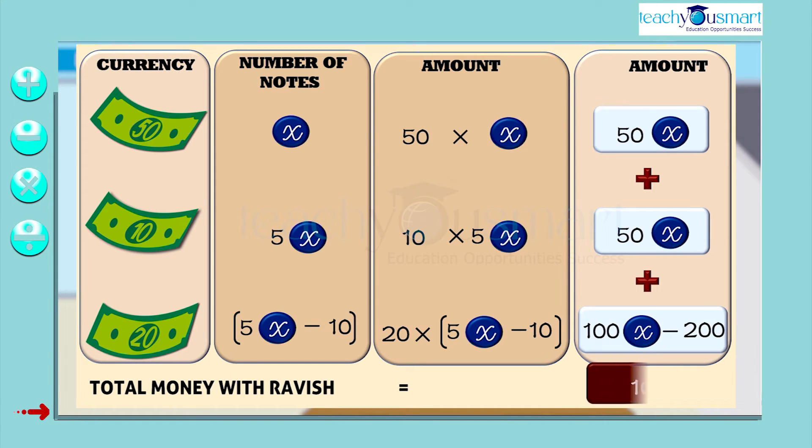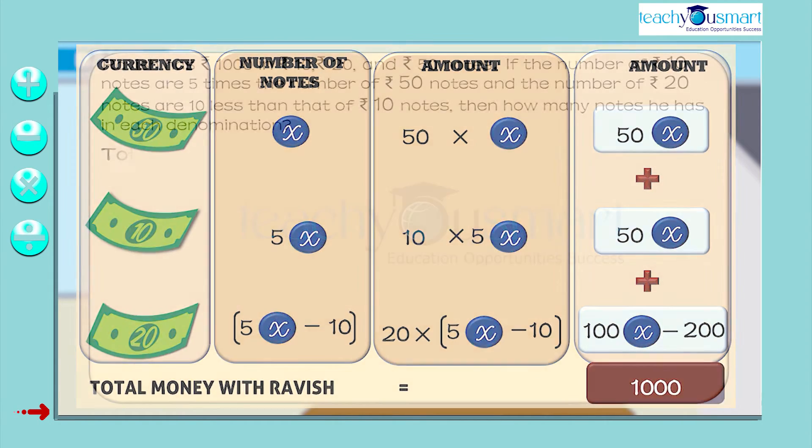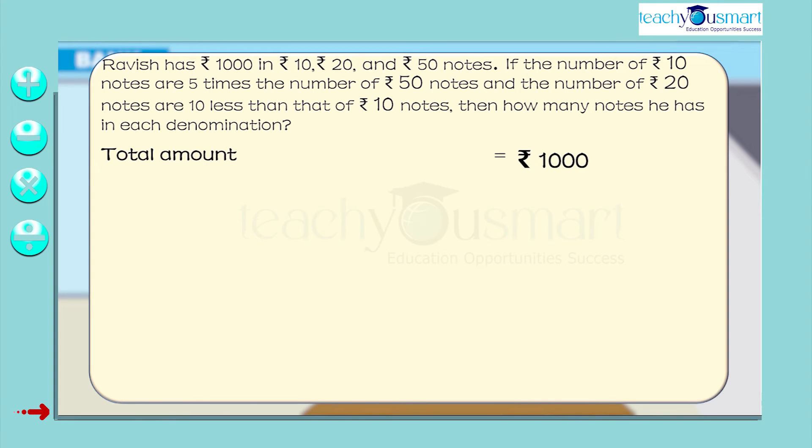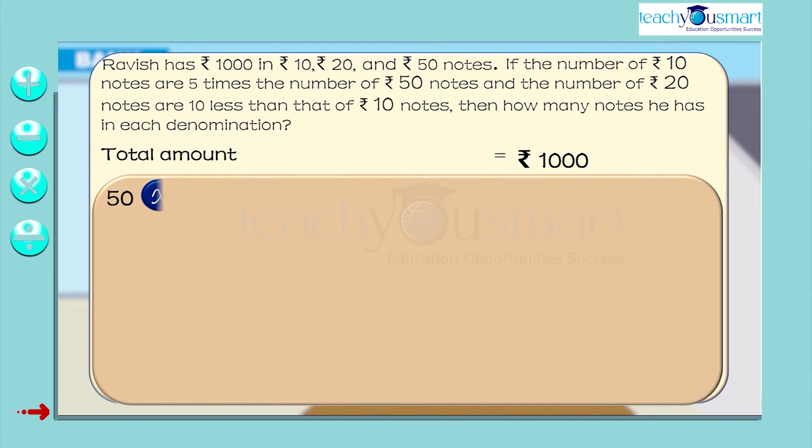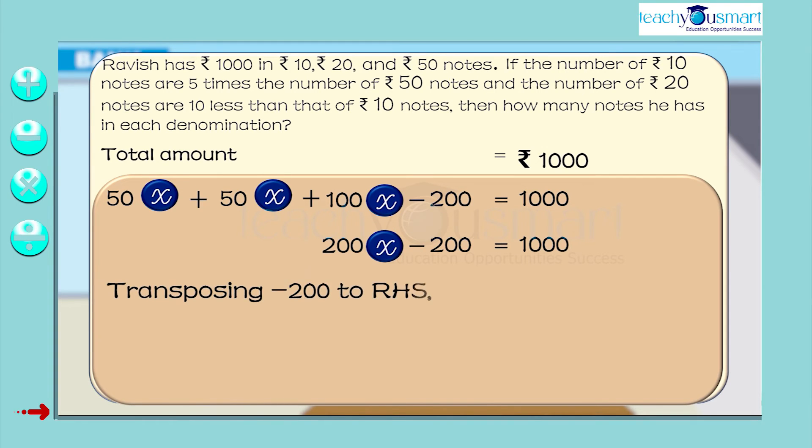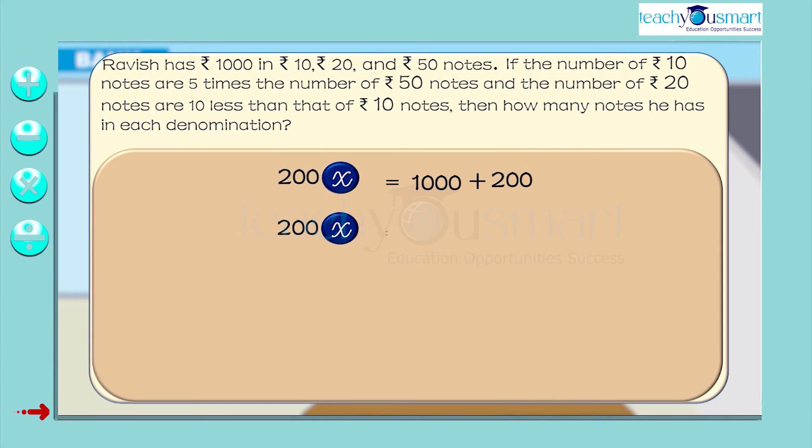The total amount is 1000 rupees. That is, 50x plus 50x plus 100x minus 200 equals 1000. That is, 200x minus 200 equals 1000. Transposing 200 to RHS, 200x equals 1000 plus 200. 200x equals 1200.